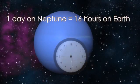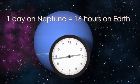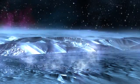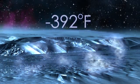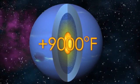A day on Neptune, or one revolution on its axis, takes about 16 Earth hours. Neptune's surface temperatures can reach a frigid negative 392 degrees Fahrenheit, but in the core of this icy planet, you'll find temperatures comparable to the surface of the sun.